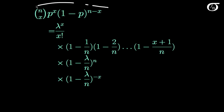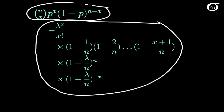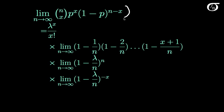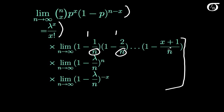What we are going to do is take the limit as n tends to infinity of this equation. These three terms involve n, but lambda to the x over x factorial does not, because we're saying that lambda, which is n times p, is a constant. We can take that term outside the limit, and we can look at the three remaining terms individually by the product rule of limits. In the first term, as n goes to infinity, the n-dependent parts go to 1, so the limit of that first term is 1.